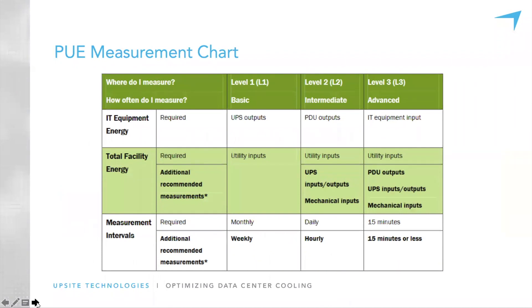This slide from the Green Grid summarizes Level 1, Level 2, and Level 3 PUE measurements — where IT equipment energy is measured from the UPS, PDUs, and rack PDU strips. It also covers measurement intervals: monthly, daily, and every 15 minutes. I was initially overwhelmed by PUE in a mixed facility — it took me 18 months to find an electric bill. But it became simple when I better understood Levels 1, 2, and 3, and I started with Level 1, measuring Monday, Wednesday, and Friday.